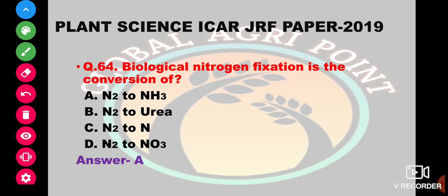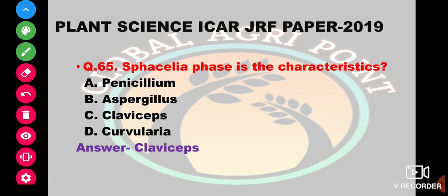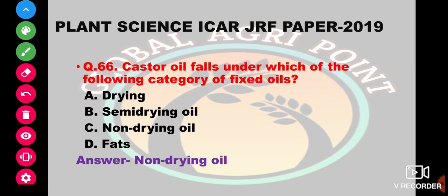Biological nitrogen fixation is the conversion of N2 to ammonia. So the answer is N2 to ammonia form. The Cephalic phase is characteristic of Penicillium, Aspergillus, Claviceps, or Curvularia. The answer is Claviceps.